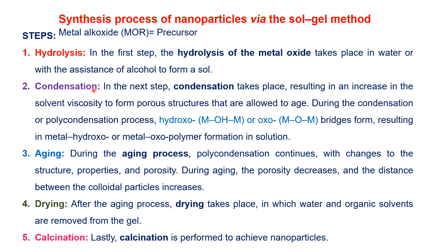The second step is condensation, which results in the formation of a gel or networking porous structure. This condensation process increases solvent viscosity and produces a porous structure that is further allowed to age. During condensation and polycondensation, hydroxo (–OH) groups and oxo (–O–) groups form bridges between two metal atoms, resulting in metal-hydroxo and metal-oxo polymer formation.